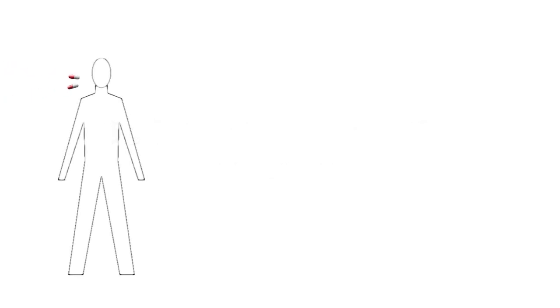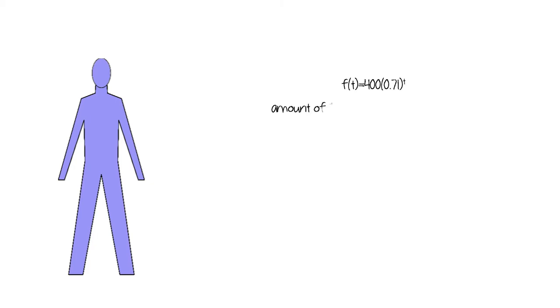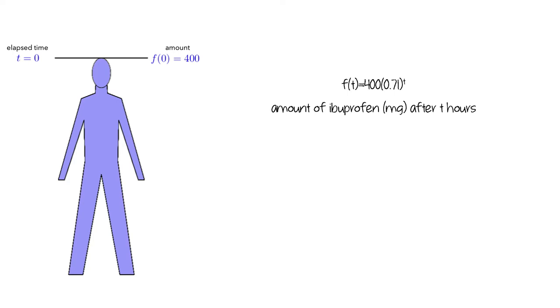Let's think about the scenario where a person takes 400 mg of ibuprofen. In this case, the function f equals 400 times 0.71 to the t represents the amount of ibuprofen in the body in mg, in terms of the number of hours elapsed since taking the 400 mg dose.